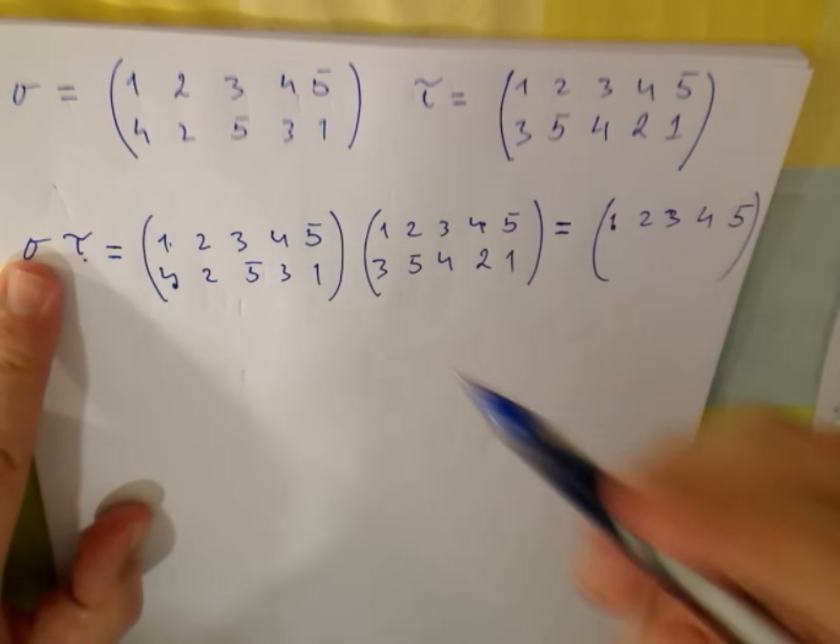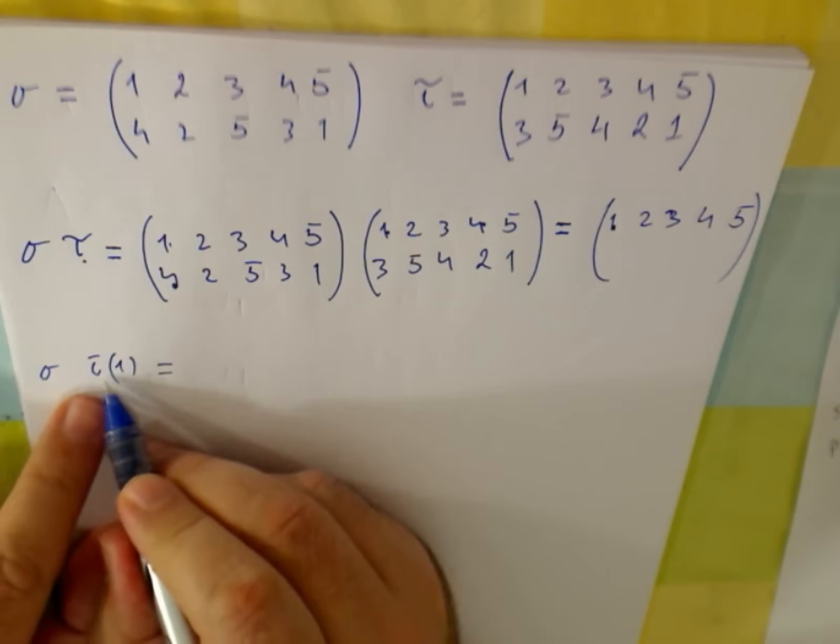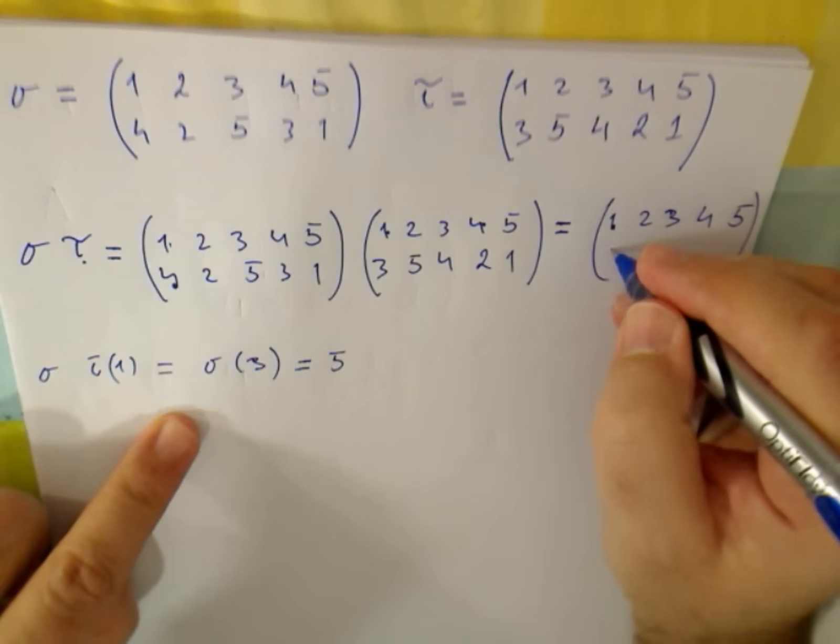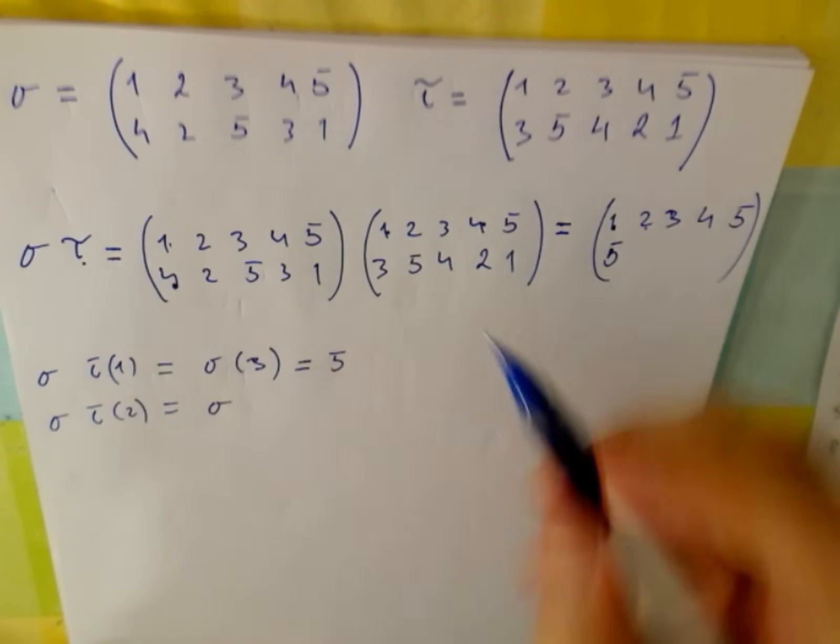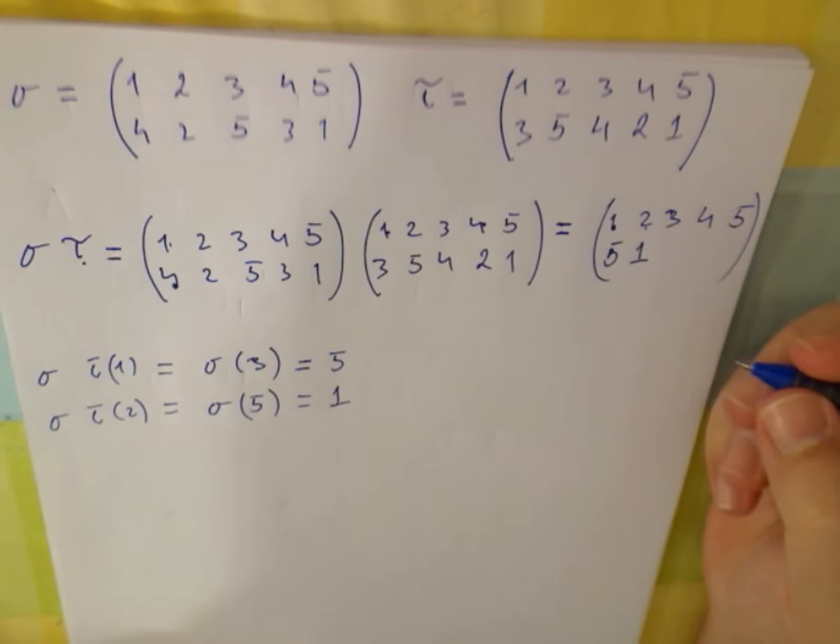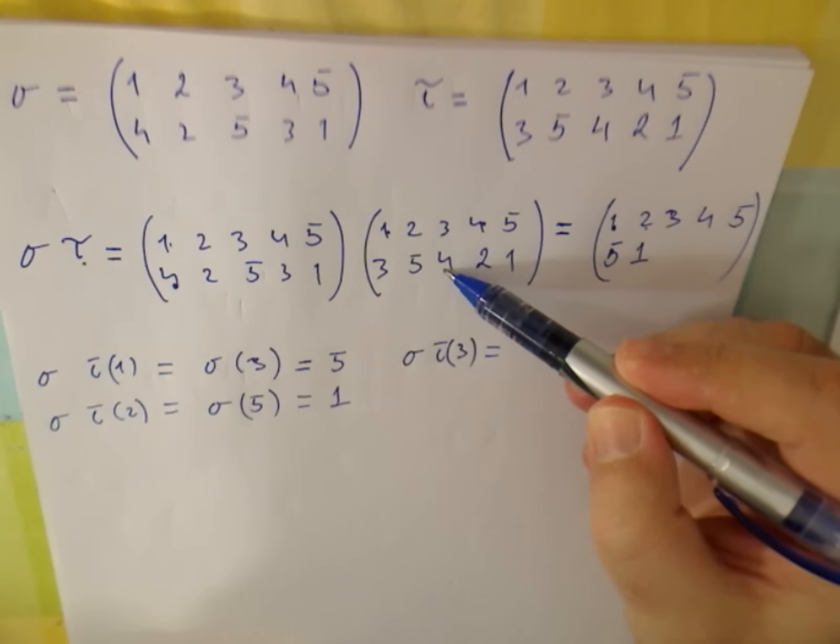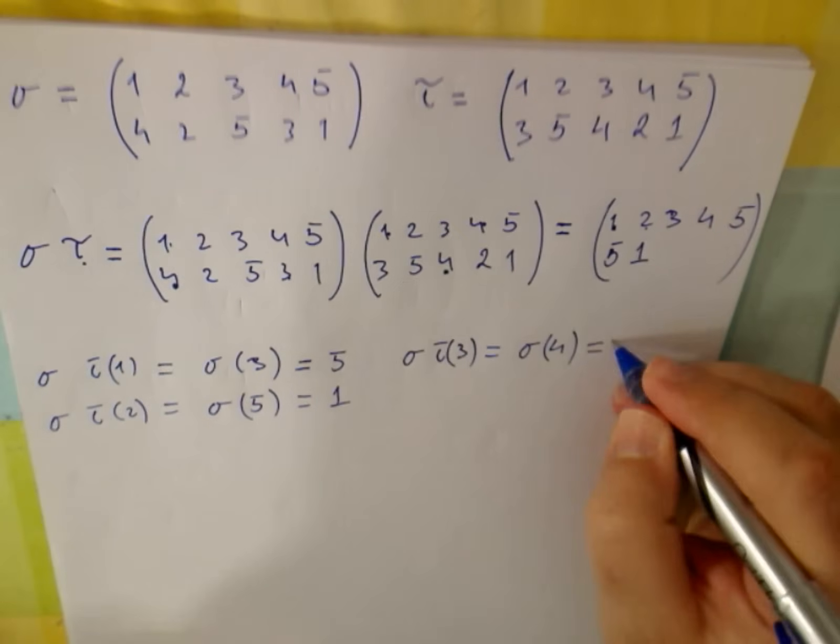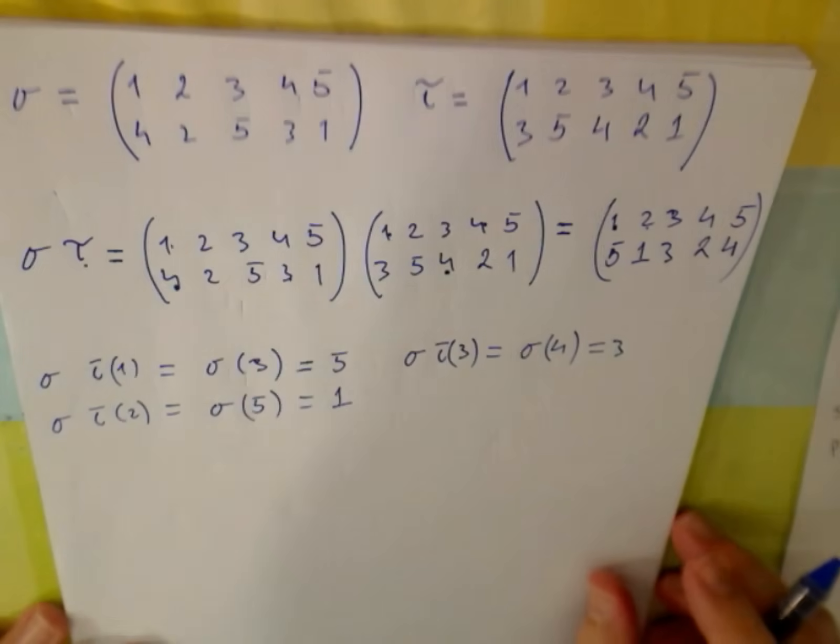But here I am going to use the classical one. I am going to say tau. So 1 goes to 3. I want sigma of tau of 1. Tau of 1 is 3. So I want sigma of 3. And sigma of 3 is 5. So 1 goes to 5. Now I want 2. So sigma tau of 2 is 5. So sigma 5. Sigma 5 is 1. So 2 goes to 1. Now, sigma tau of 3 is 4. So it will be sigma of 4. And sigma of 4 is 3. So it will be 3. So 1, 5, 1, 3, 2, 4. And here you are.